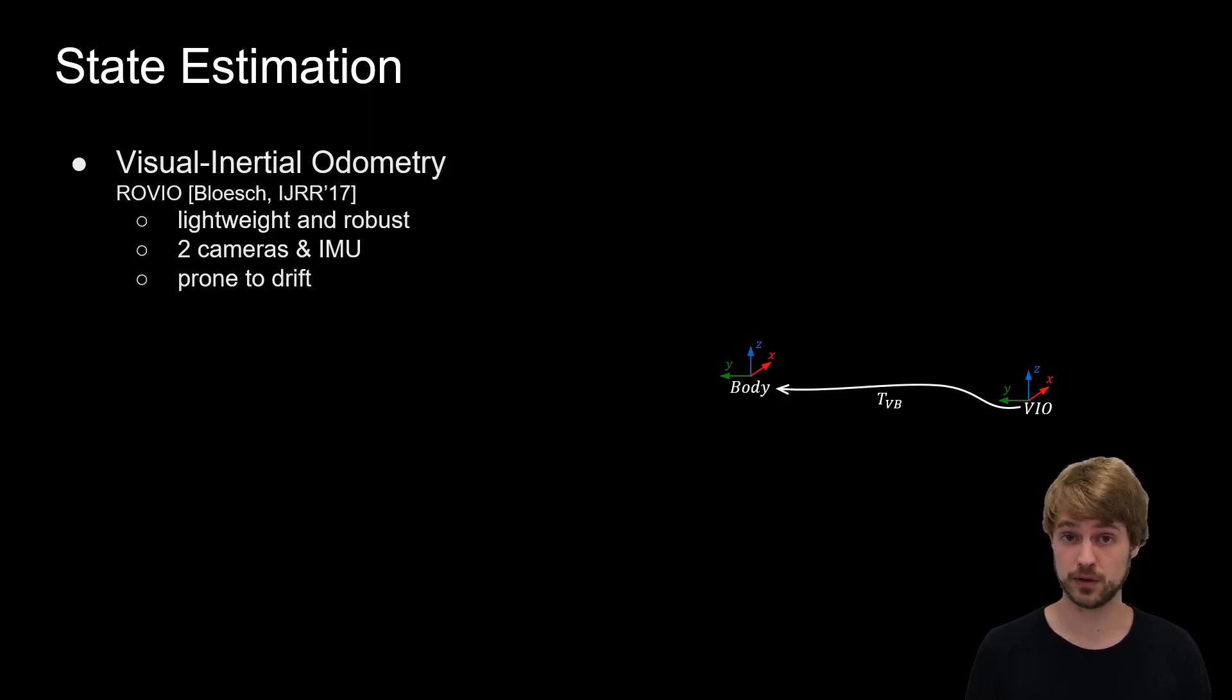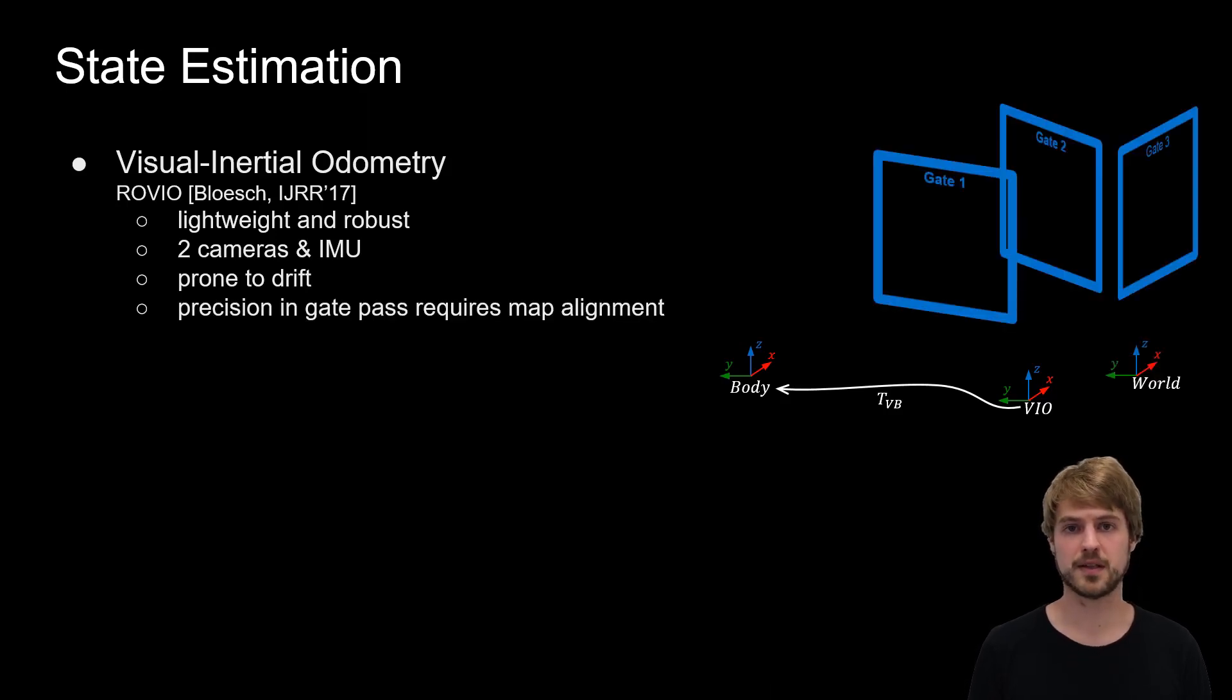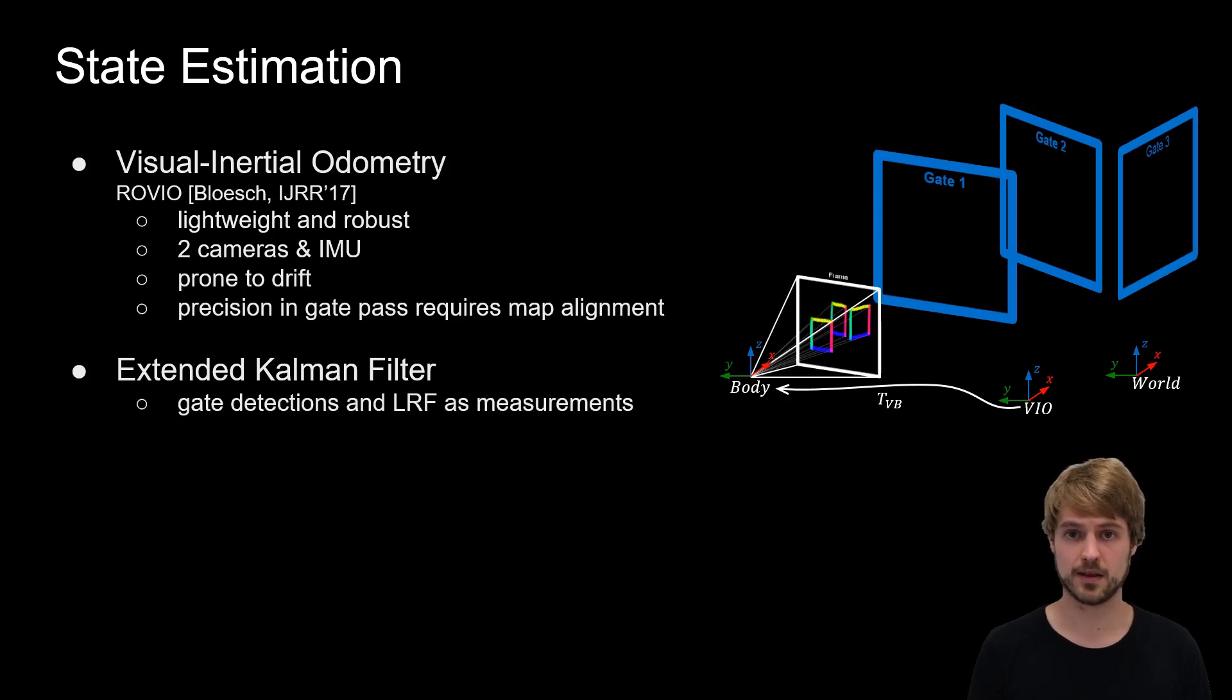VIO, however, is prone to drift, and we need to be precise when passing the gates. This is why we perform map alignment. We use an extended Kalman filter that fuses the output of the VIO together with gate detections and altimeter measurements.